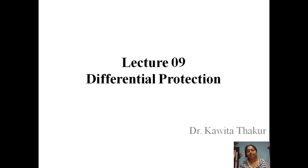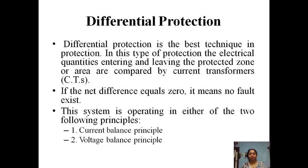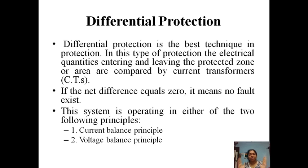Welcome to our ninth lecture, which is based on differential protection. Differential protection is the best technique in protection. As we concluded in the last lecture, we are using differential protection for protection of feeders and dead zones. This is a unit protection scheme where the zone is defined between two CTs — the relay will operate inside that zone and will not operate outside. The electrical quantities entering and leaving the protected zone are compared; if the net difference equals zero, no fault exists.